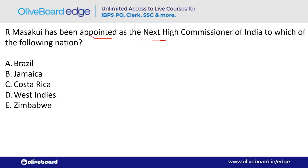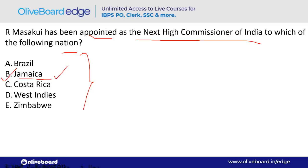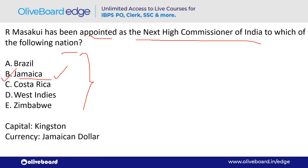R. Masakui has been appointed as the next High Commissioner of India to which nation? The answer is Jamaica — option B. Jamaica's capital is Kingston, and its currency is the Jamaican Dollar.